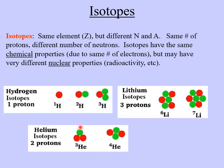The isotope with two neutrons and one proton is called tritium, H-3, with three total nucleons. Moving to helium: helium-4, the most common form found in helium balloons, has two protons and two neutrons, giving atomic mass number four. Helium-3 has two protons and one neutron. For lithium, element number three, lithium-6 has three protons and three neutrons, and lithium-7 has three protons and four neutrons.